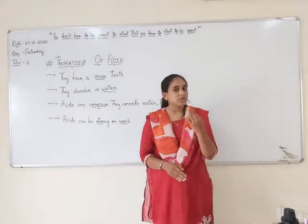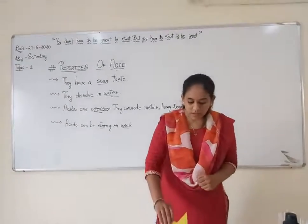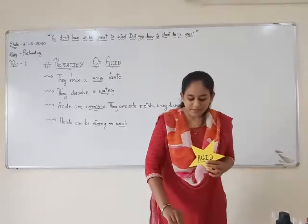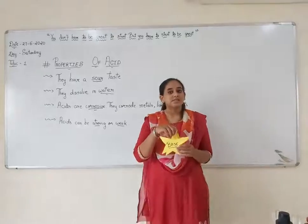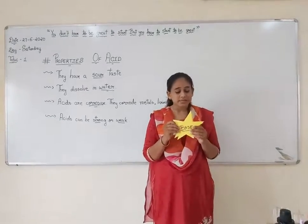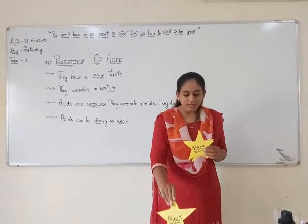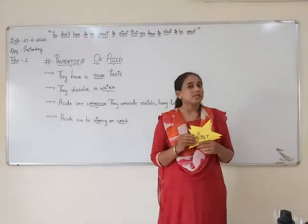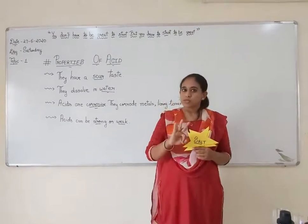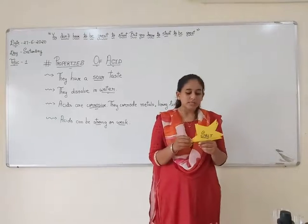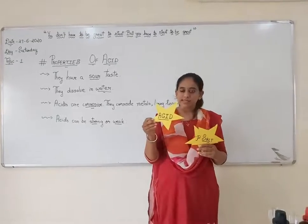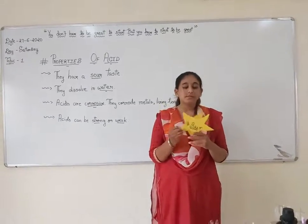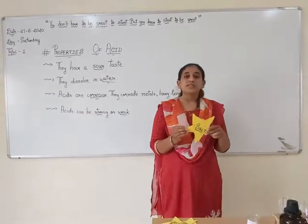Based on properties, these substances are classified into three types. The first type is acid, the second type is base, and the third type is salt. So substances are basically classified into three types based on their properties: acid, base, and salt.